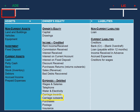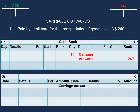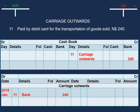Now let's record this transaction. First, we open our carriage outwards account. Then we credit our cash book with 240, entering the amount in the bank column because it was paid with a debit card, with the description 'carriage outwards.' Since we are crediting the cash book, this means we are paying money out. To complete our double entry, we debit our carriage outwards account with 240, and the description in the details column will be 'bank,' because it was paid with a debit card and the amount is in the bank column. This completes our double entry process.